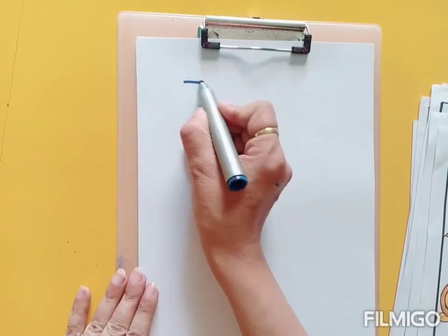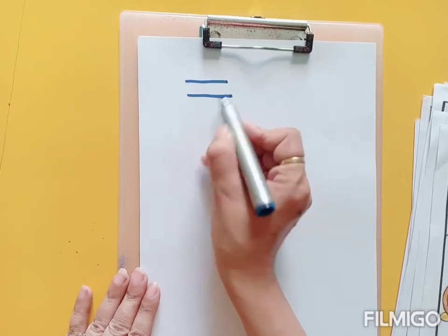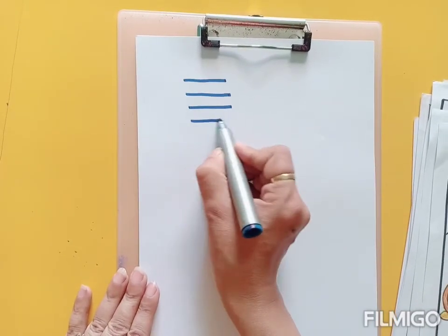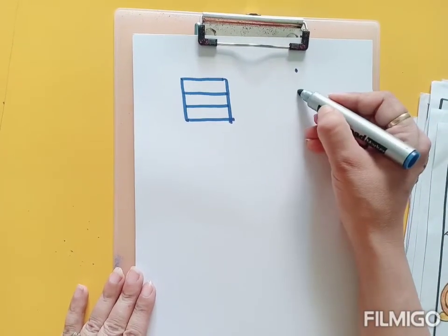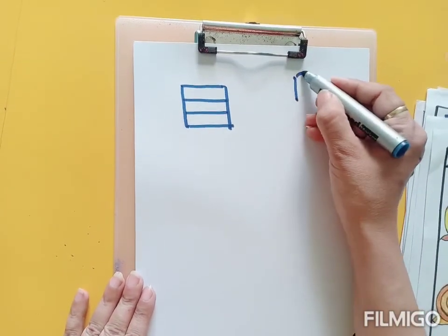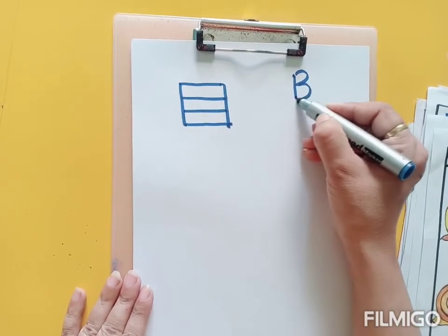alphabets. Now after that, when we have given ample of worksheets to our child, then we are going to introduce four-line concepts to our child. Since our child knows in the free hand, the child knows the steps to